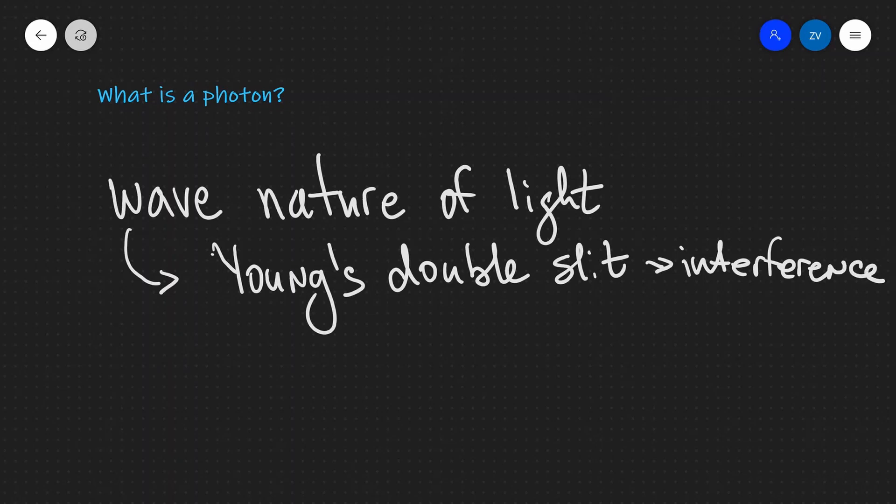Additionally, in the lab, we've also done an experiment on diffraction, the spreading of light when it goes through a gap or passes around an obstacle. And we've done a couple of others as well, but these are the main experiments which show the wave nature of light.